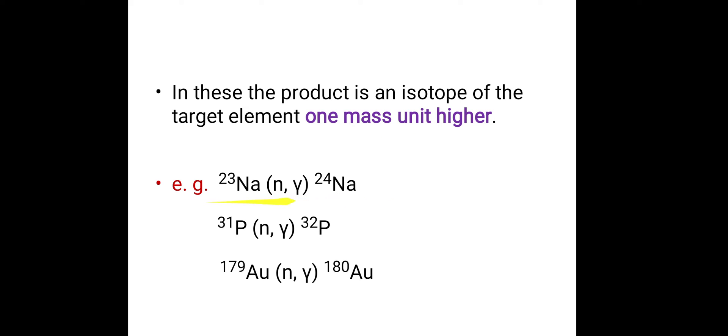For example, see this is a nuclear reaction. It is written in a Bethe's notation form. Sodium 23, it is a target nuclide. It is bombarded with the neutron, that neutron is called the projectile. Then that sodium 24 is a product and that gamma is called the ejectile.